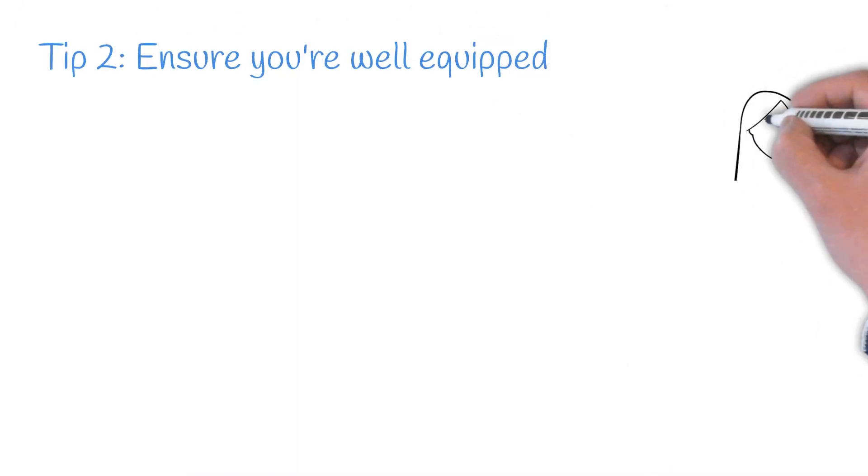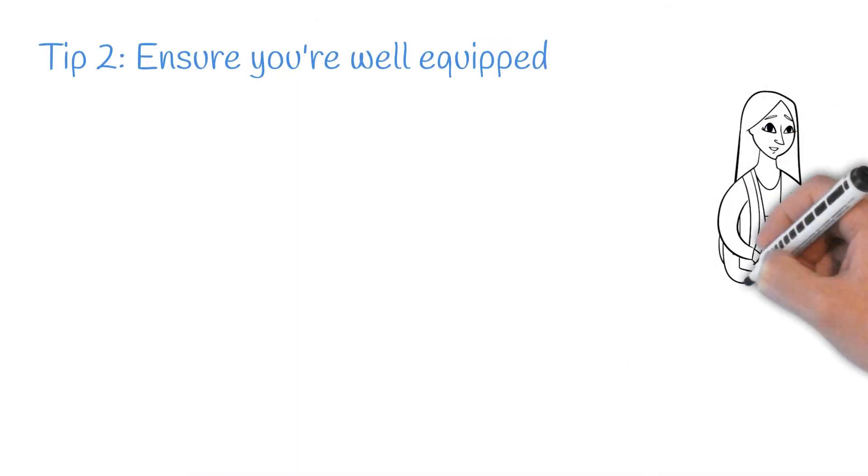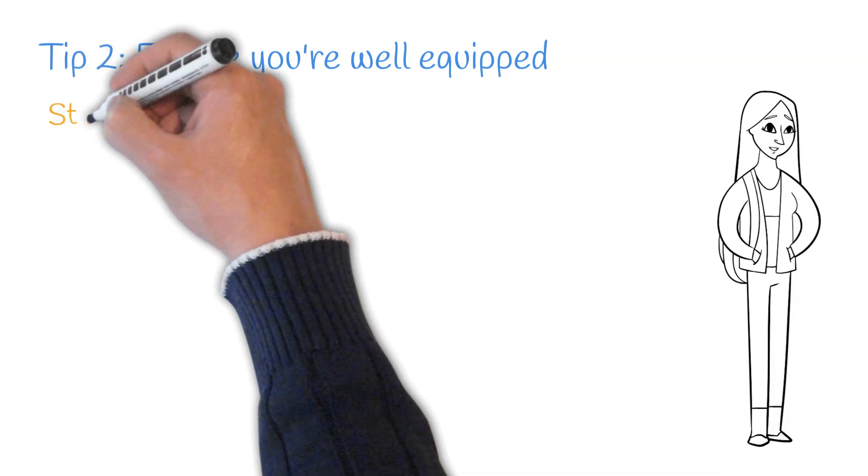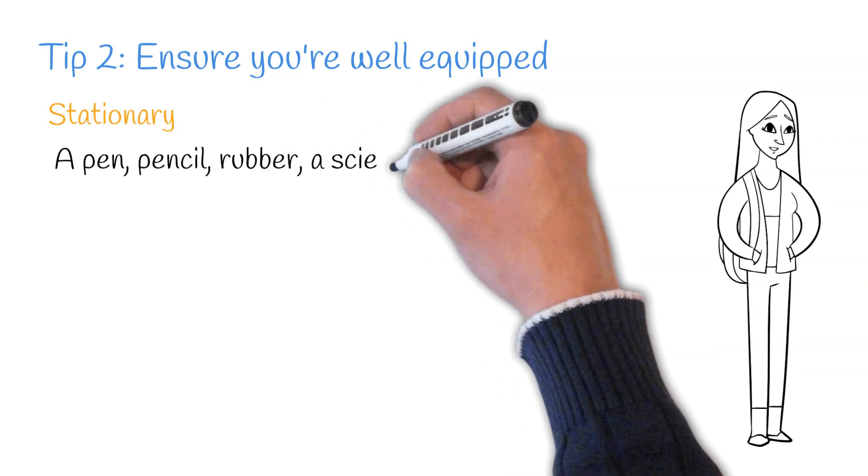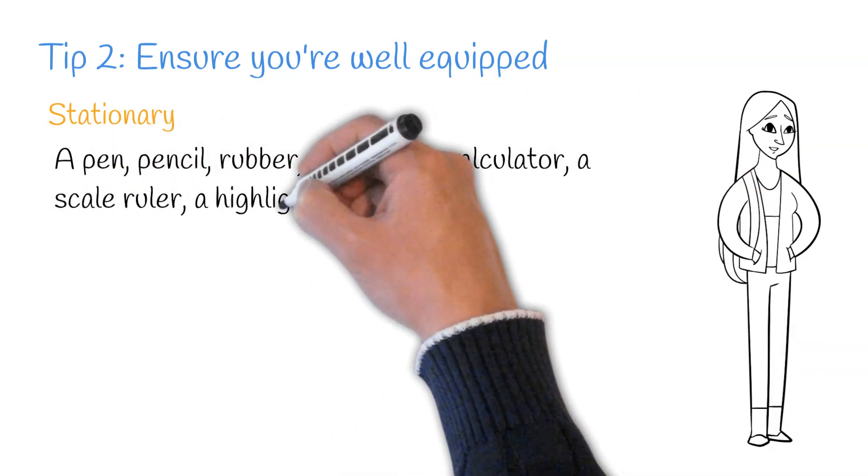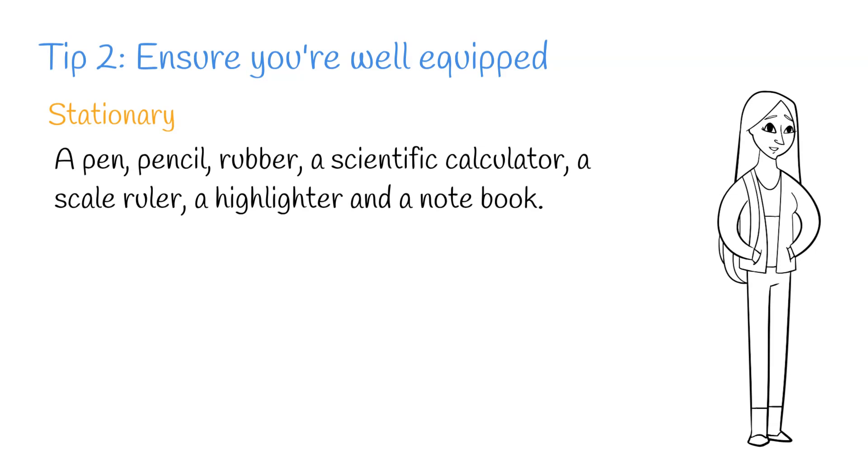Tip two, ensure you're well equipped. Ensuring you're well equipped for university is very important. In terms of stationery, we recommend a pen, a pencil, a rubber, a scientific calculator, a scale ruler, a highlighter and a notebook.